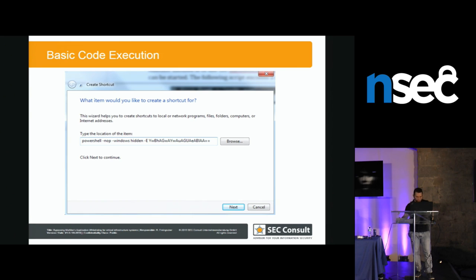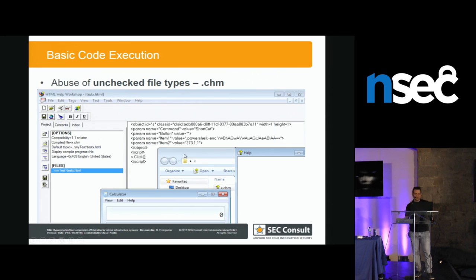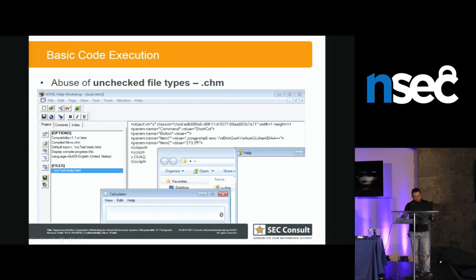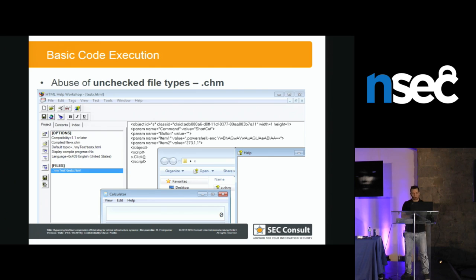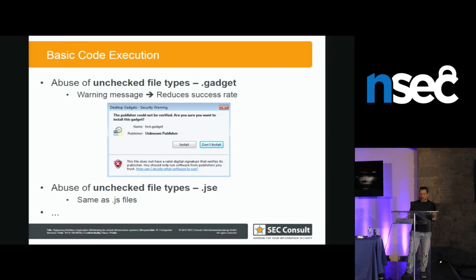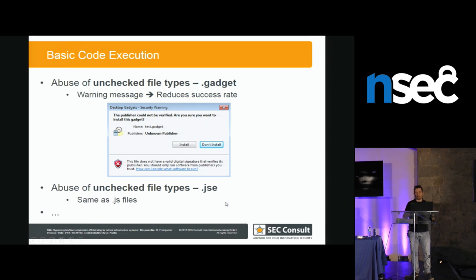There are many more such extensions — encoded JavaScript files and many more — so you'll always find some extension you can abuse. A gadget isn't so good because you get an ugly warning. My idea was to look at the most common attack vectors I use to compromise systems and see if application whitelisting protects against them.